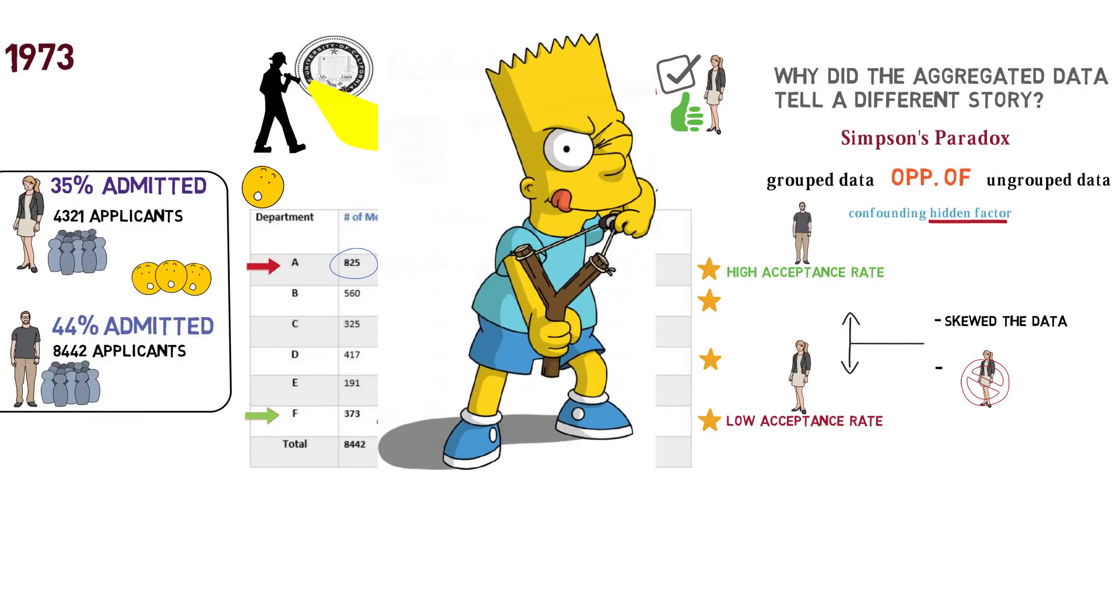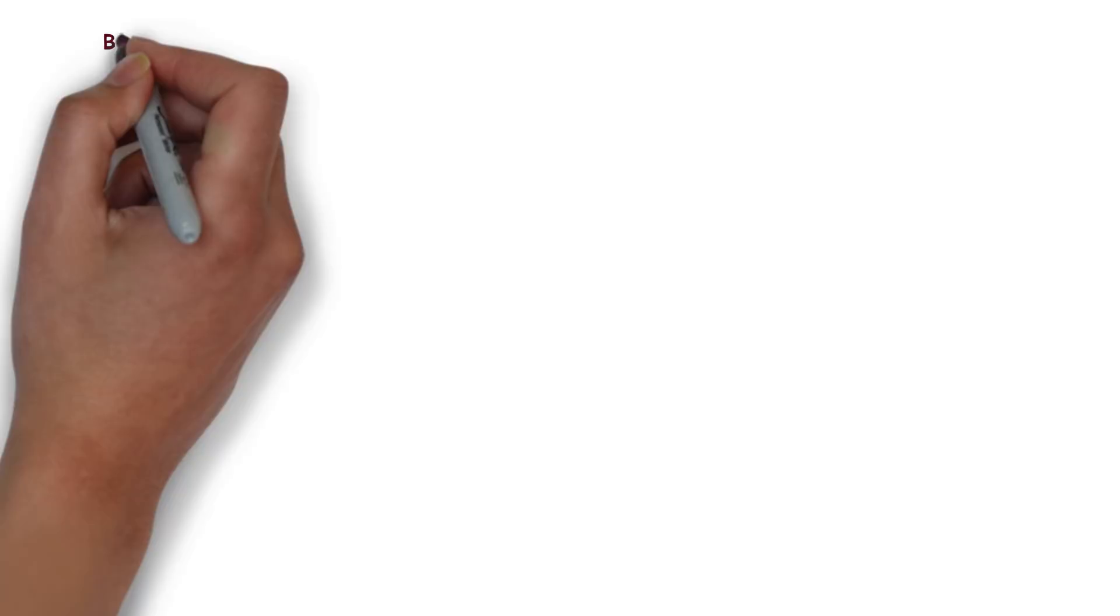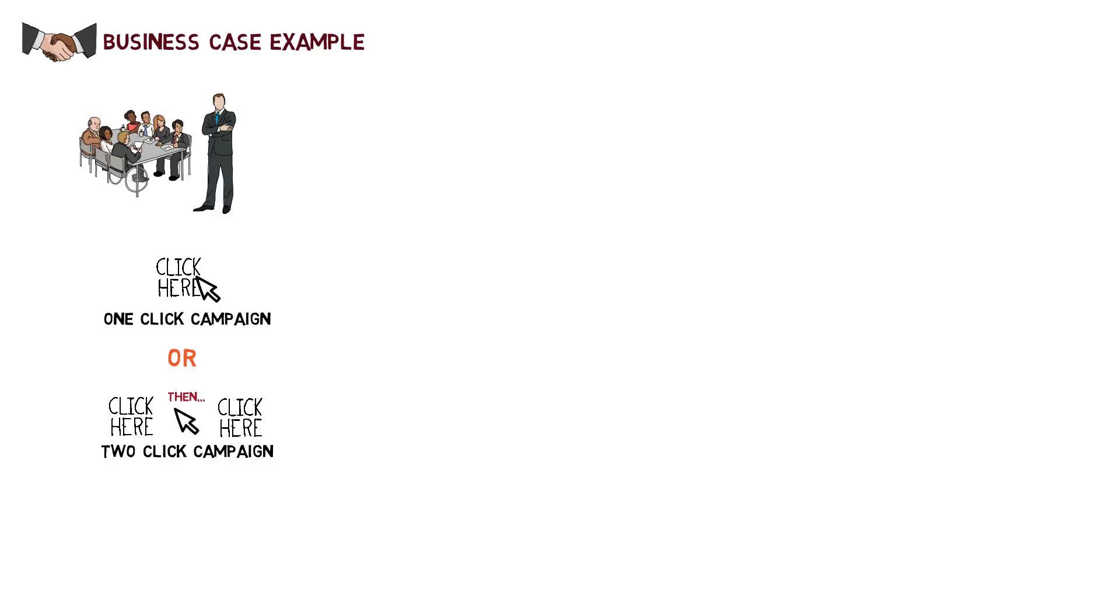This sort of data mischief—the Simpson's Paradox—can happen everywhere, even in businesses who use data to make important decisions. Here's a business case example: a CEO and his team were deliberating whether to use a one-click advertisement campaign or a two-click advertisement campaign. That's when the marketing manager, who happened to support the two-click campaign, showed him some data.